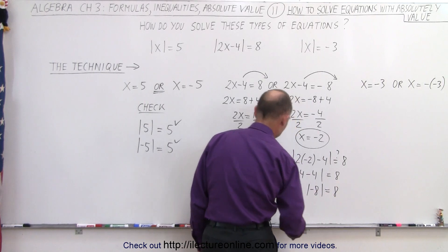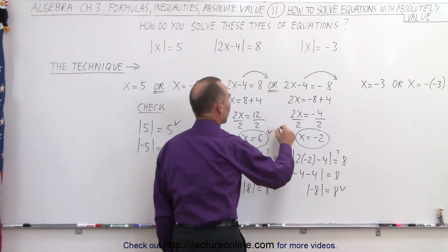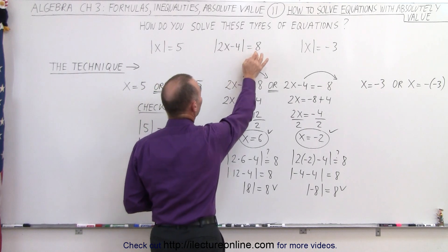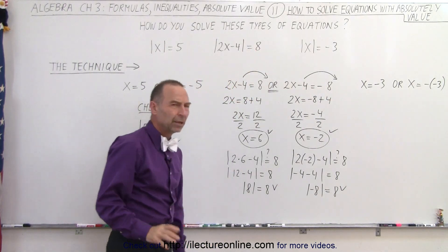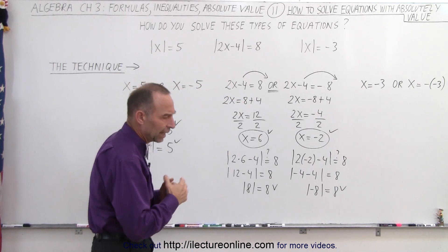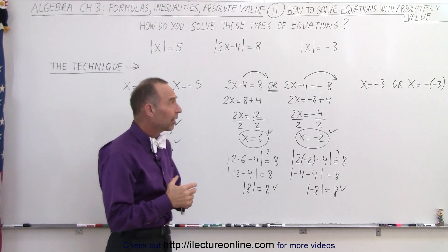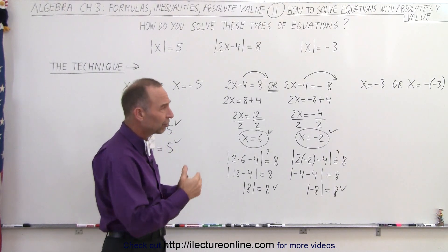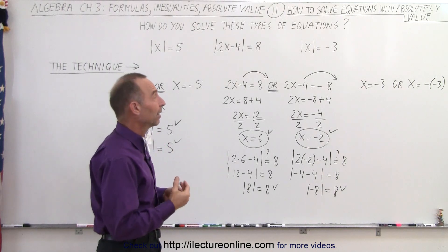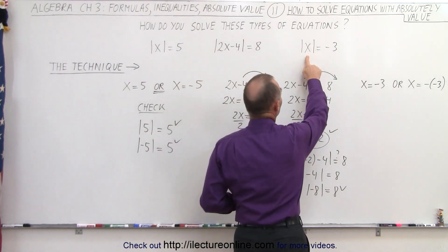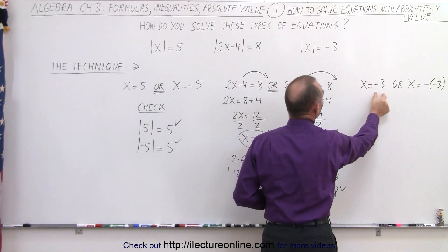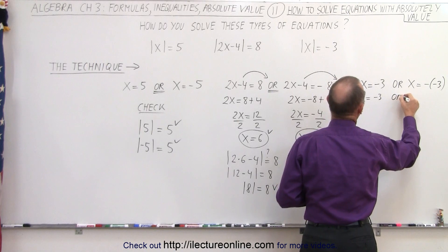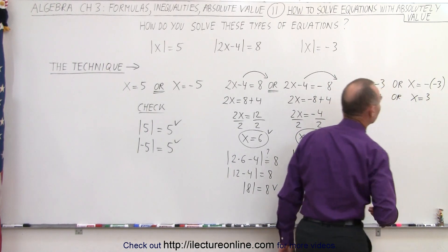If we take the absolute value of that, we should get a positive value, not a negative value. So that looks suspicious. But let's go through the process anyway. We're going to set what's inside the absolute value signs equal to the value on the right, and the negative of that value, which would be positive 3. So we set x equal to negative 3, or x equal to positive 3, and see what happens.